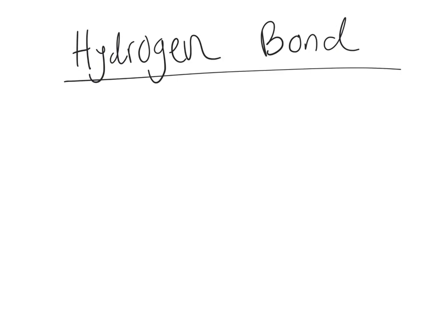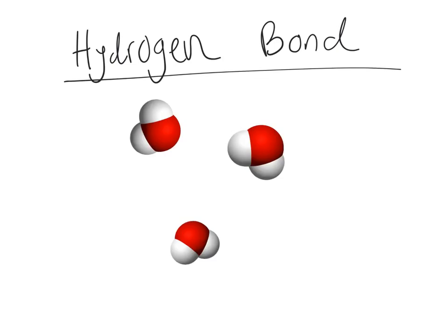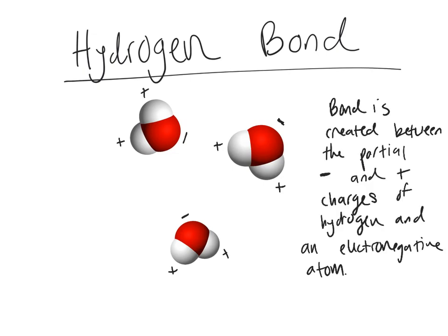The biggest example is hydrogen bonding between two water molecules. Here we have three water molecules. As discussed in the polar section, water does have a partial charge due to its polarity — oxygen hoards the negative electrons, making the oxygen region of a water molecule slightly negative, and the hydrogen regions slightly positive. A hydrogen bond is a weak bond between these positive and negative partial charges — opposites attract. Hydrogen bonds are always indicated by dotted lines. As water flows around, these bonds are constantly breaking and reforming.